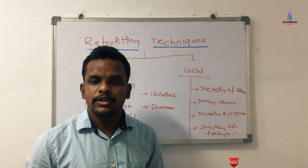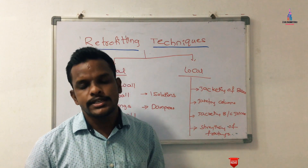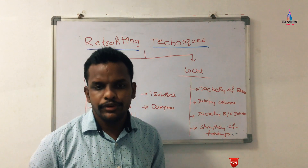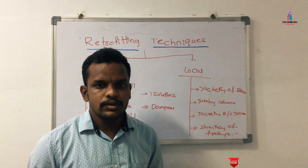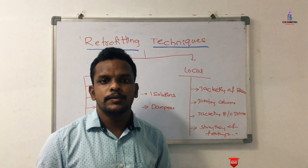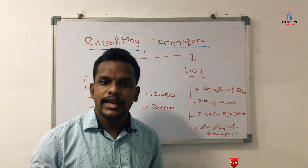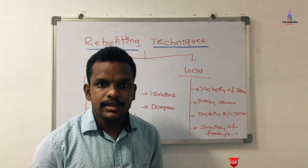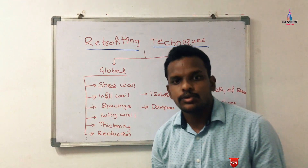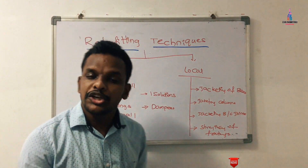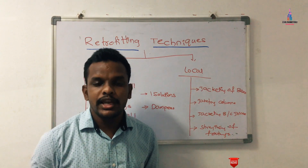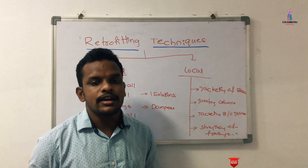I will explain an example so that you can easily understand the concept of the retrofication process. If you consider a G plus 3 structure constructed in a high seismic zone — let us take zone 5 — it will have a higher amount of deflection value, higher shear value, higher building torsion value, and so on. The damage rate will be more for that structure.